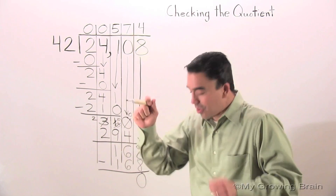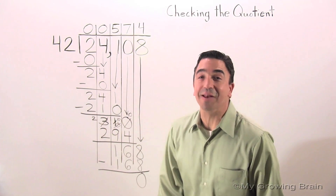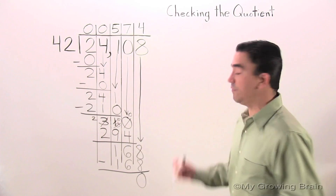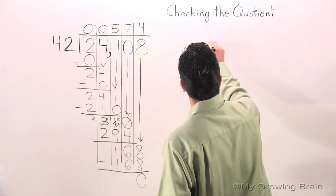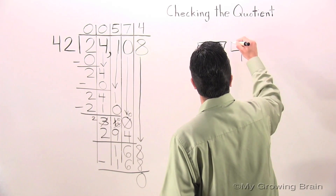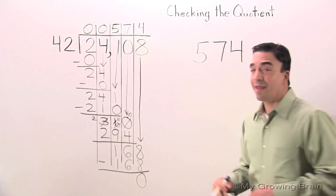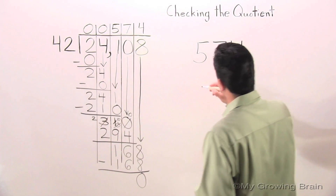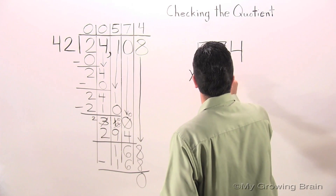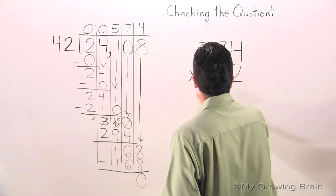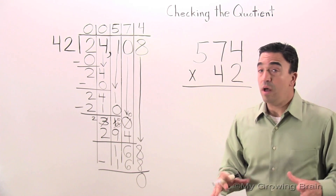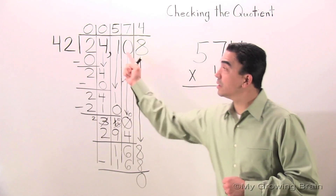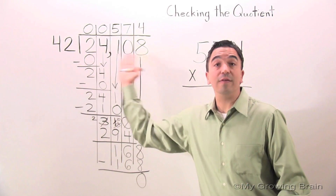And all my friends out there, you know how Coach Mike loves multiplication. So let's get to it. First thing I'm going to do is take the quotient, 574, and multiply it times the divisor, 42. When we complete this problem, the product should be equal to the dividend in this division problem.